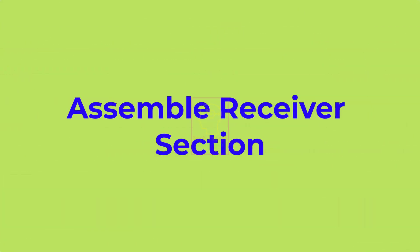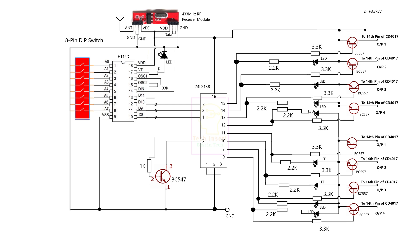Now we will start assembling the receiver section. This is the schematic of the receiver section — if you have watched my 8-channel RF switch video, you can see this circuit is very similar. Using this circuit it can handle only 7 devices, but I have given 8 controls because in the future I will fix this issue. Watch pin number 13 of HT12D — through a 1k resistor it is connected to the base of a BC547 transistor, and the collector is connected to the sixth pin of the 74138 priority decoder. Giving a high signal to the sixth pin of 74LS138 enables that IC. By default that sixth pin is already high.